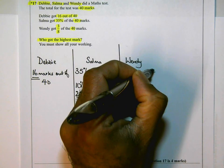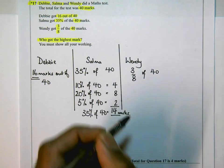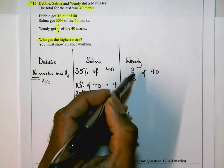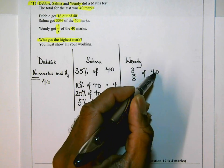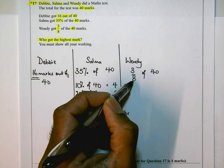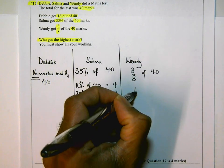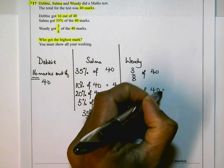Now this is a type of question that a lot of people have difficulty with, finding a fraction of an amount. 3/8 – in order to find 1/8, I need to divide by 8. So 40 divided by 8 would give me 1/8. So 1/8 of 40 is 40 divided by 8.